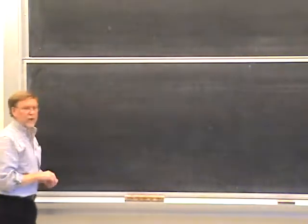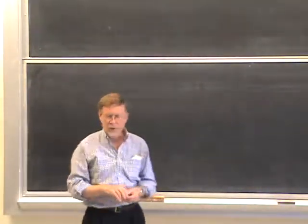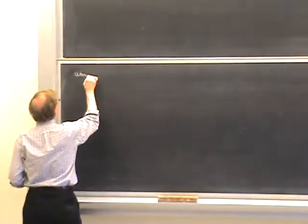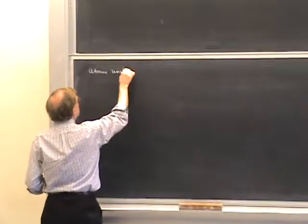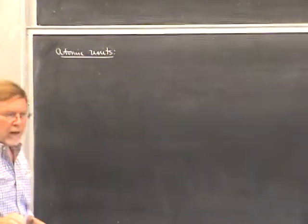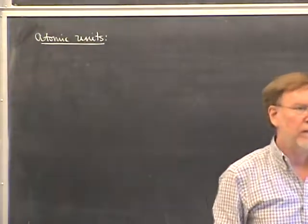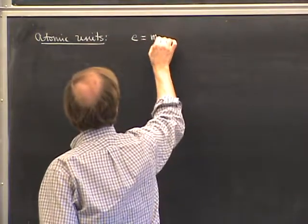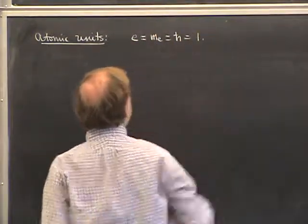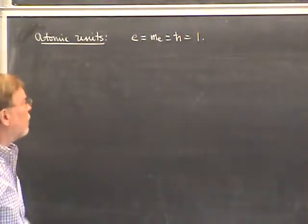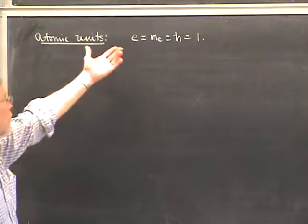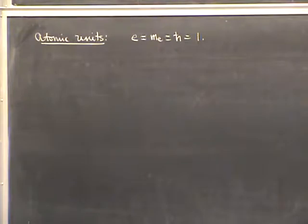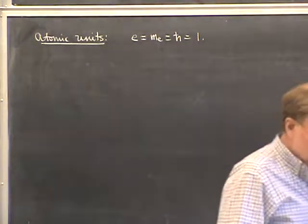Before I begin, I want to say something about units and orders of magnitude. It's convenient to use atomic units, which are used a great deal in atomic physics. Atomic units take the three physical constants that occur in the Schrödinger equation for hydrogen and set them equal to one: the electron charge e, the electron mass m, and ħ are all set equal to one. You can't set any more physical constants equal to one — these are the only three independent ones you can use, and this is the most you can set equal to one.